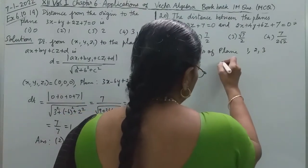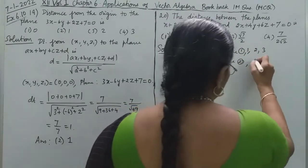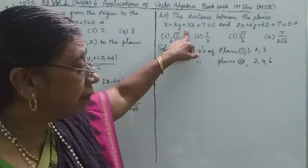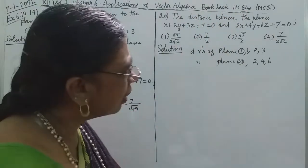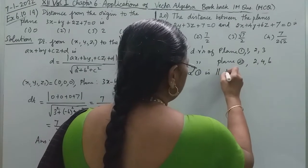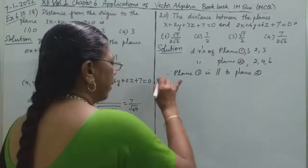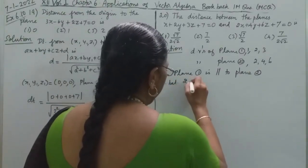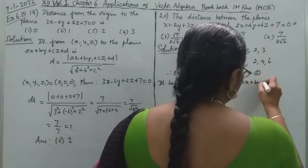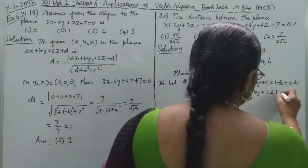What about the direction ratios of plane 2? This is the first plane and this is the second plane. This plane is parallel to plane 2.